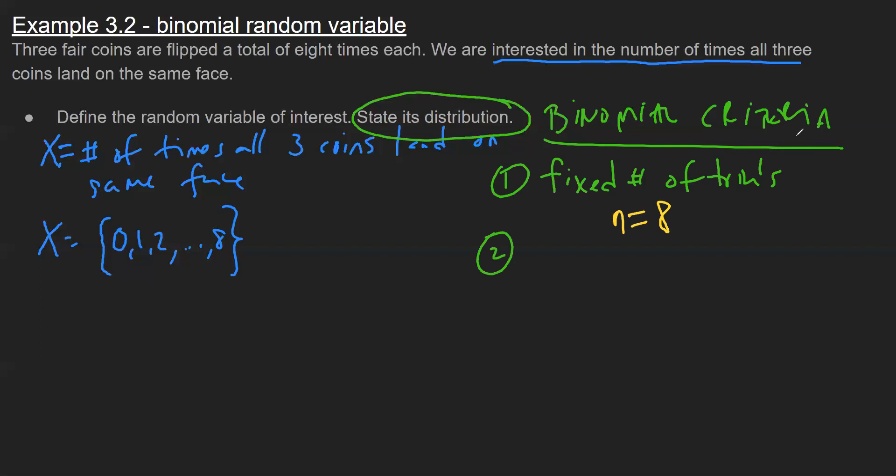Another criteria is that we have two outcomes, and that's where the prefix bi comes from in binomial. The outcomes are defined as success and failure, where success is just the outcome you're interested in counting. Since I'm counting how many times they all match, I define that as my success. So the two outcomes would be they either all match or they don't all match.